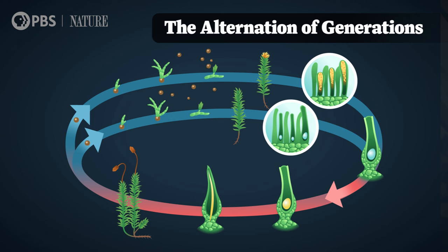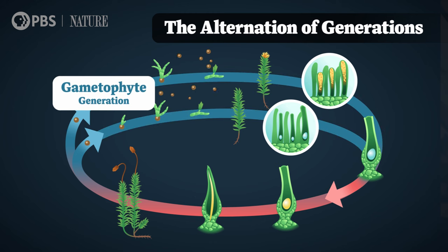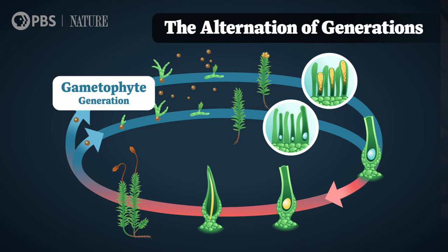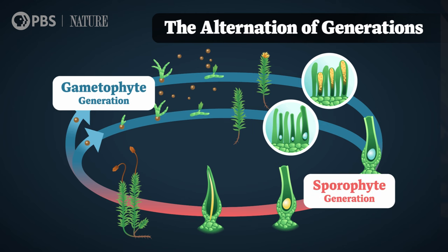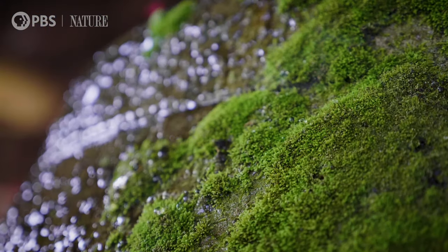The cycle alternates between two different types of generations. One with only half its DNA, called the gametophyte generation, because it makes gametes — eggs and sperm. And one with a full set of DNA, called the sporophyte generation, because it makes spores. So if a parent plant made spores, its offspring would make gametes, then its offspring would make spores, and so on.